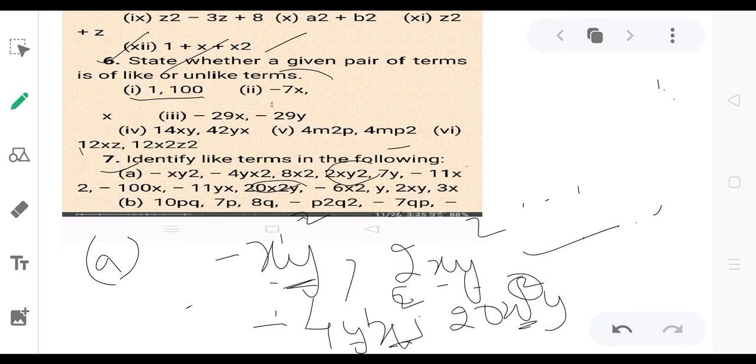When x power 2 equals x power 2 and the other variables match, we have like terms.